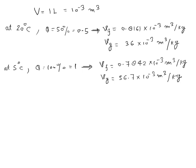In this question, the volume of the can is 1 liter (10⁻³ m³) and the initial temperature is 20°C at which the quality is 50%. We will write these values from the R134A table. VF is the specific volume of saturated liquid at 20°C, and VG is the specific volume of saturated vapor. Similarly, at the final temperature of 5°C, the quality is given as 100%, so it equals 1.